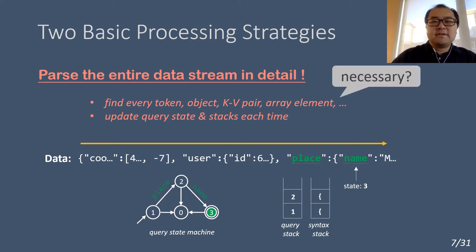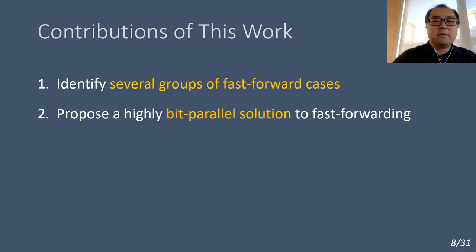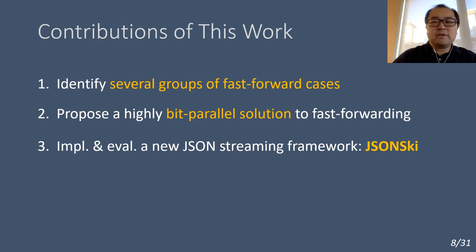However, is this detailed scanning really necessary? Interestingly, in this work we found several groups of cases where certain data segments don't need to be examined in detail, and thus can be fast-forwarded. However, it is challenging to perform the fast-forward efficiently. To address this, we proposed a highly bit-parallel solution. Finally, we realized our solution as a new JSON streaming framework called JSON-Ski, and we compared its performance with several state-of-the-art JSON processing tools.